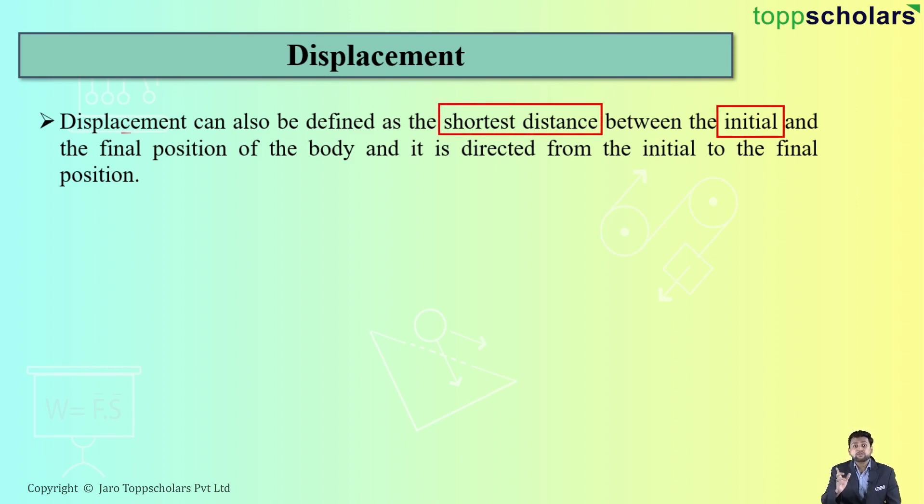So what is displacement? The shortest distance between initial and final position. Students, one thing you must remember that displacement is always directed from the initial position to the final position. Now let's understand displacement with an example.